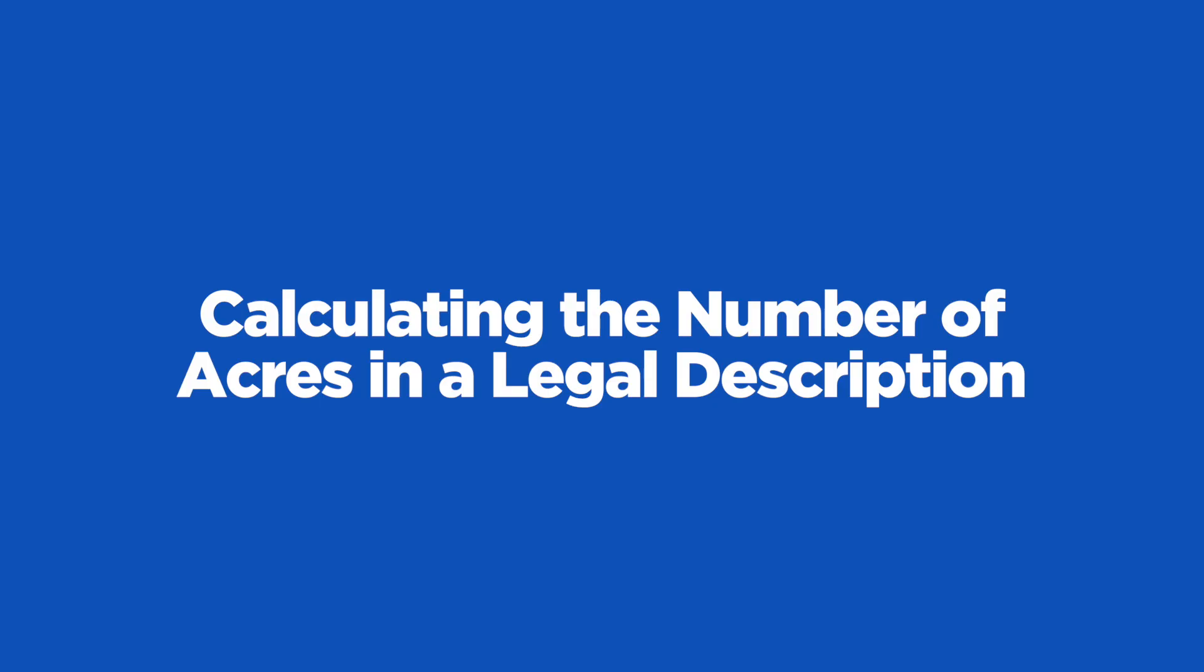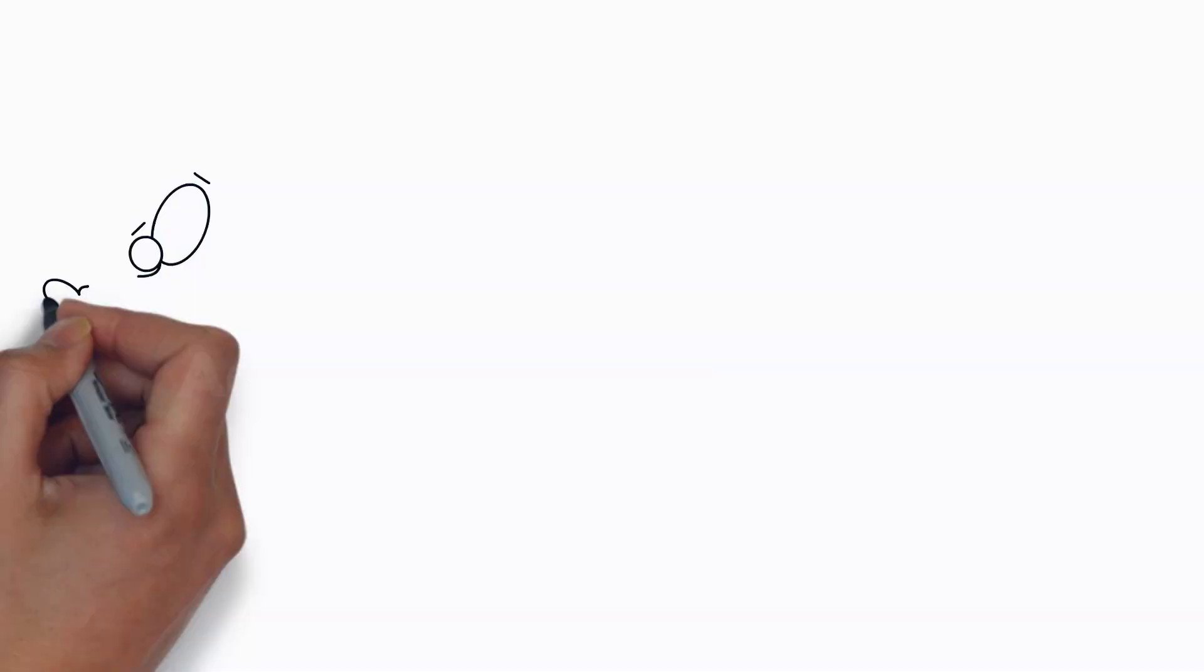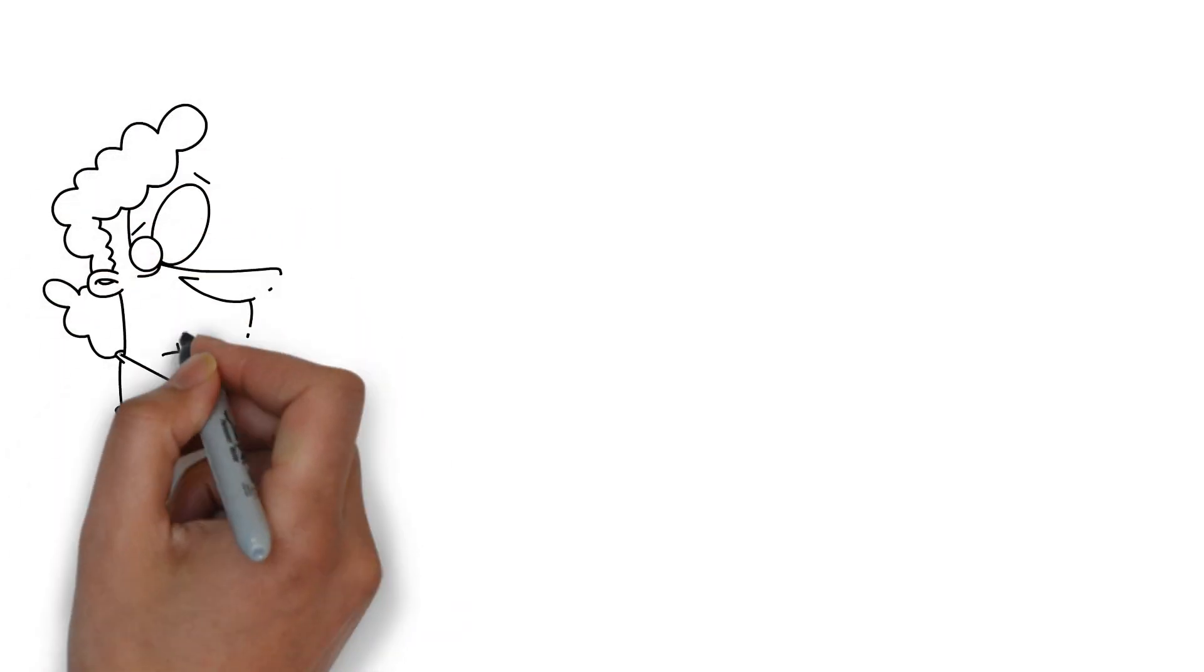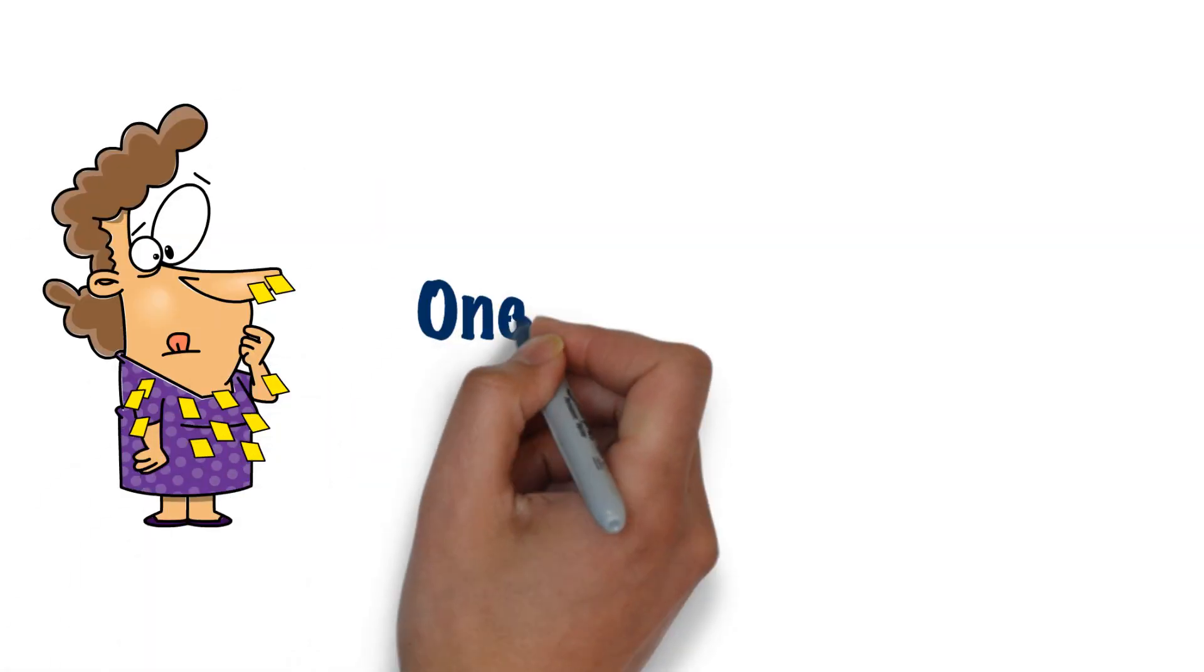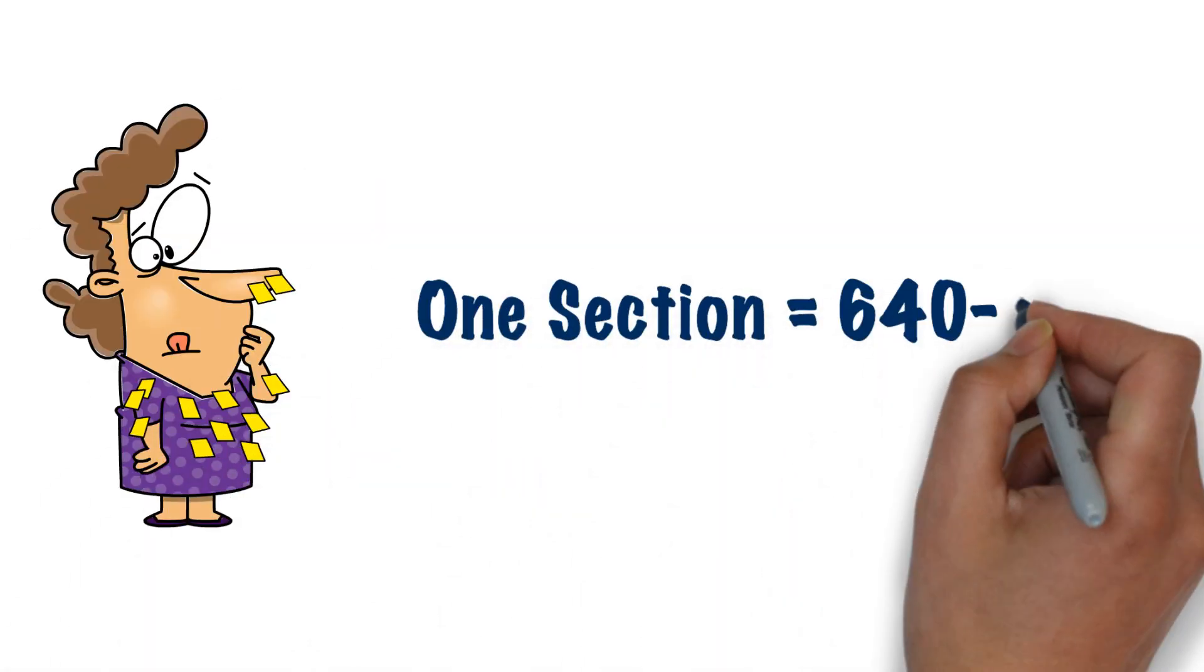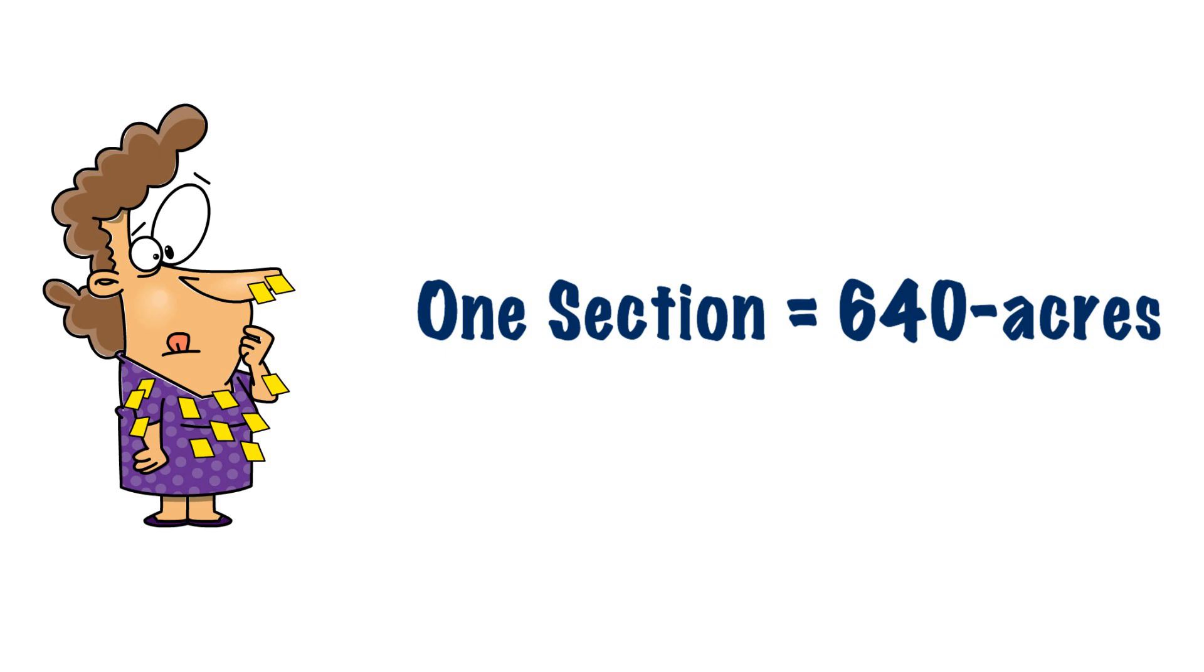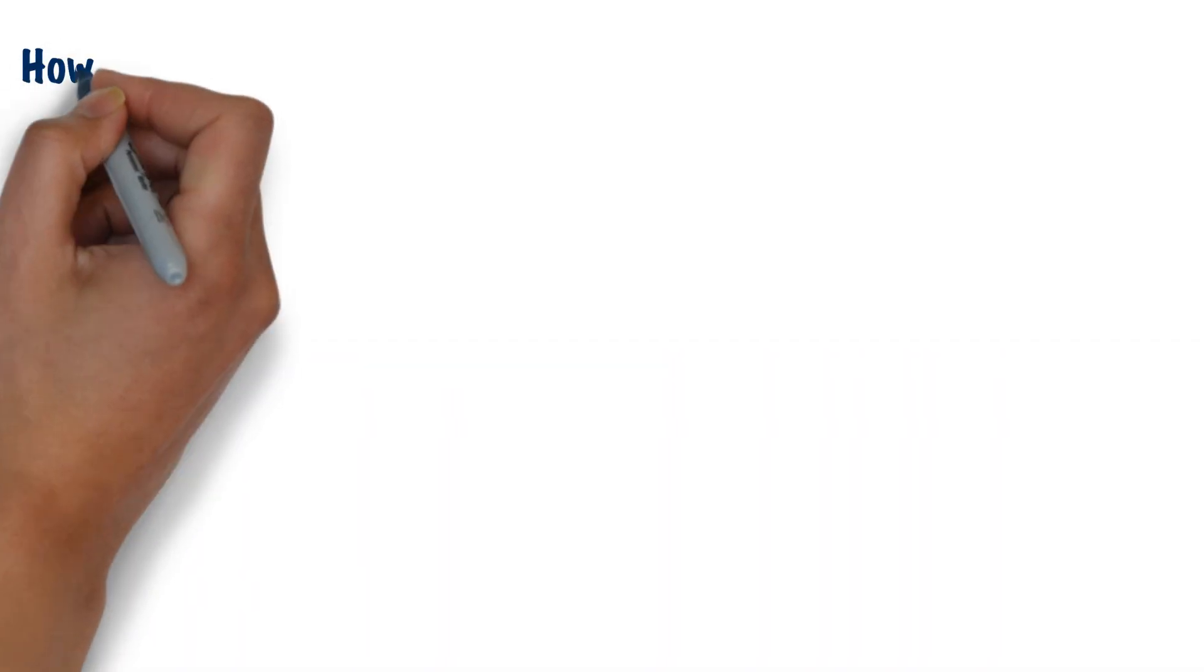In this whiteboard, we'll demonstrate how to calculate the number of acres in a legal description. When it comes to taking the Florida real estate license exam, there are some things you're just going to have to commit to memory. One of those is that one section equals 640 acres. You just have to memorize it because if you don't, you're not going to be able to solve these types of questions.